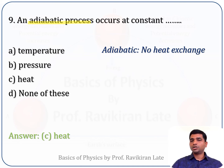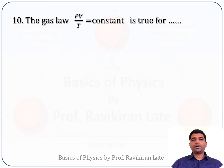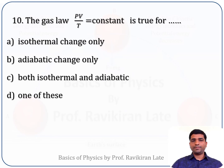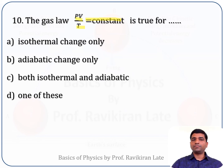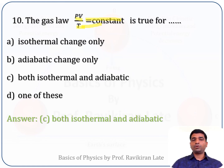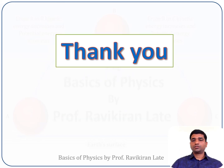Question 10: the gas law pv/t = constant is true for — option A: isothermal change, option B: adiabatic change, option C: isothermal and adiabatic, option D: none of these. Rearranging pv/t = constant gives pv = rT, which is the ideal gas equation for one mole of a gas. This relation is valid for both isothermal and adiabatic processes. The correct answer is option C: isothermal and adiabatic. That's it for today's session — thank you so much.